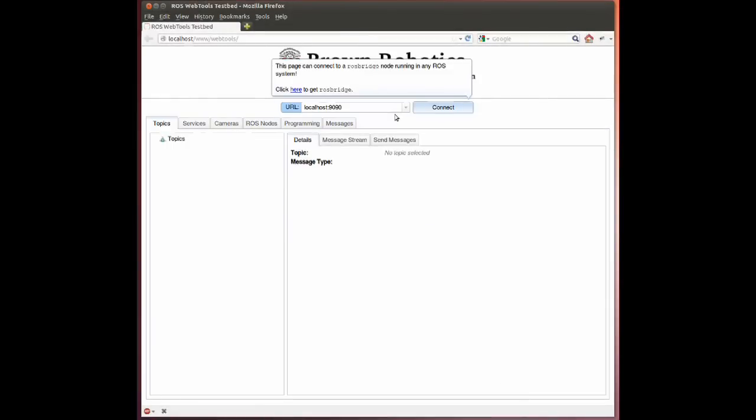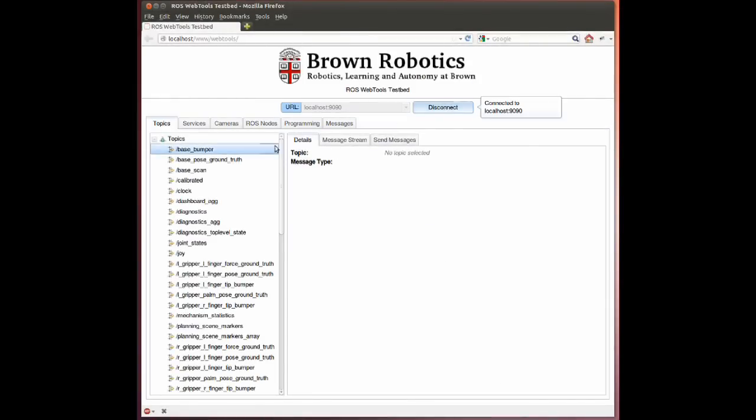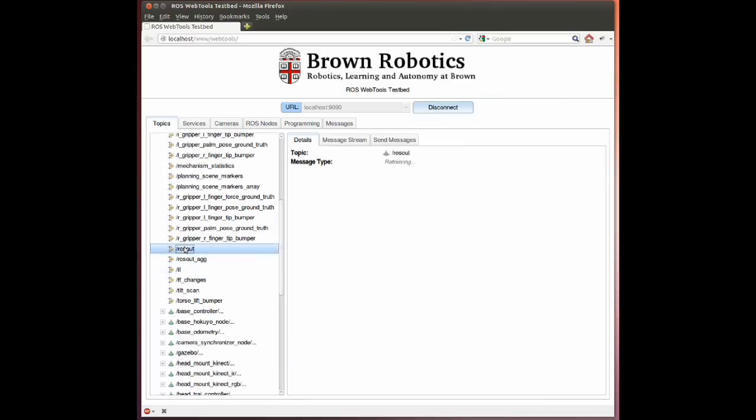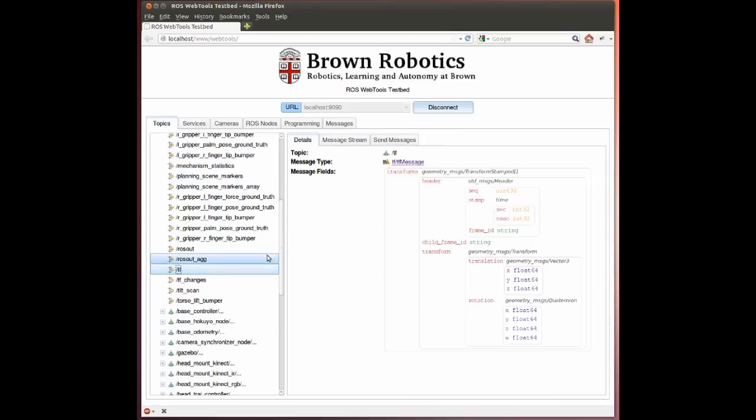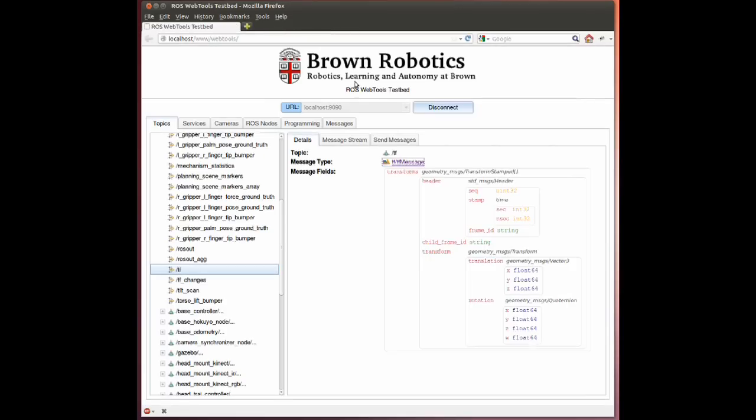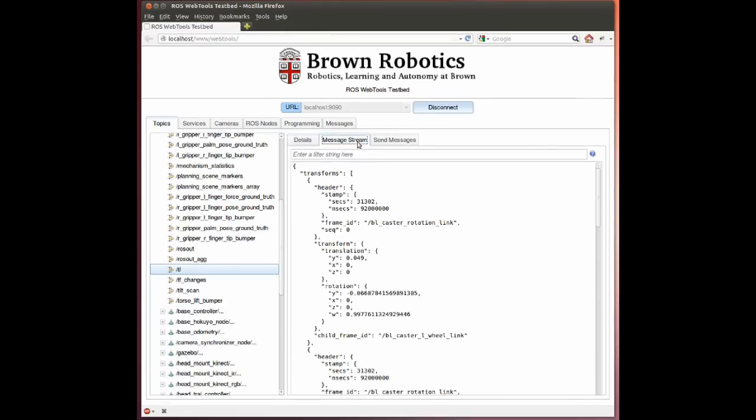The RossBridge suite contains a number of core packages that provide a dynamic API to the services, topics and libraries of Ross. In addition, we have included useful packages for web development, such as a new version of RossJS, a Ross-aware HTTP server, and packages for throttling and transforming Ross data for low bandwidth connections.